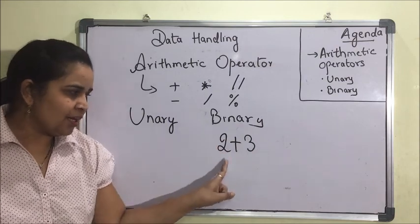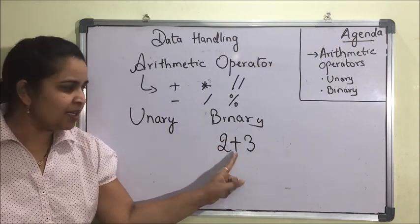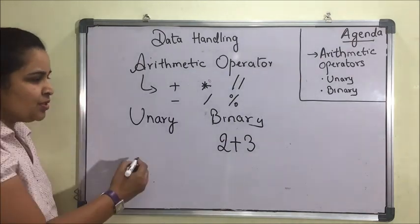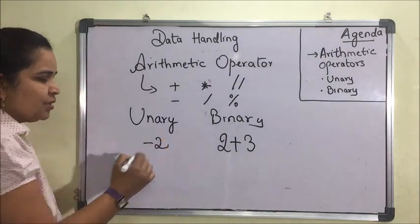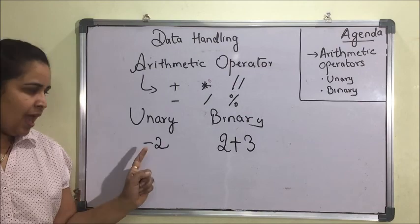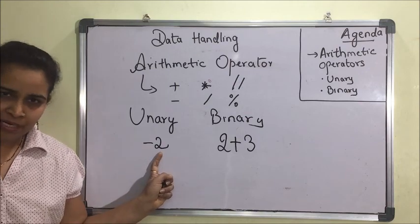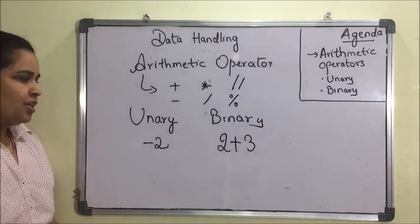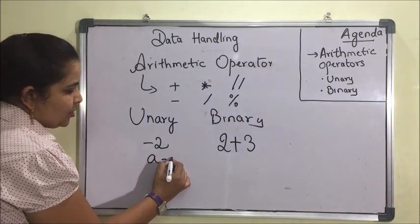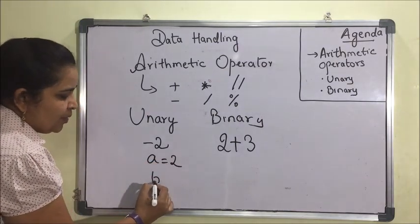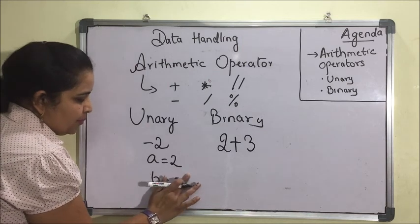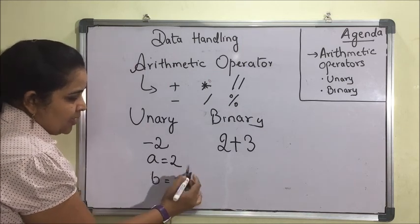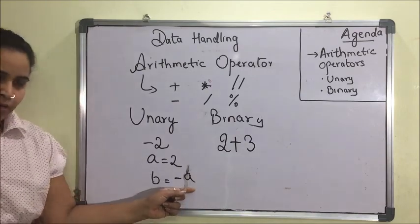This makes it a binary operator, as it has two operands. Suppose I have written minus 2 — in this case, as only one operand is there, that is why this is a unary operator. For example, if a = 2 and b = -a, this is a unary operator as it needs only one operand.